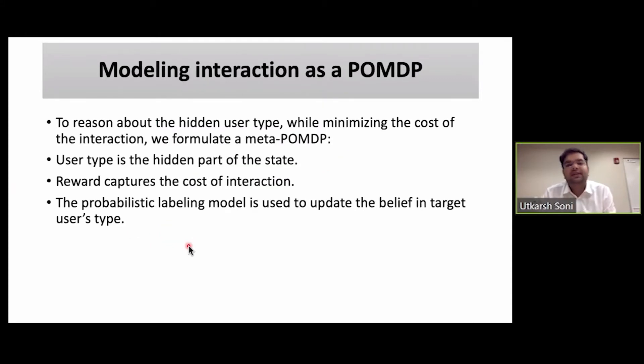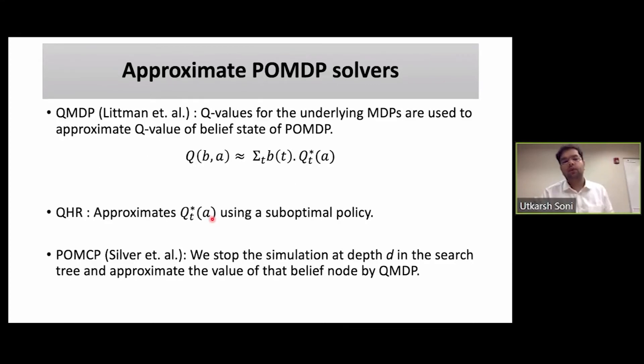Finally, we model this interaction as a POMDP, as a meta-POMDP, where the user's actual type is considered to be the hidden variable of the state. In this case, the POMDP's reward will capture the cost of interaction, and we use the probabilistic learned labeling model to update the belief in the target user's type. As we keep interacting with the user and keep getting labels for the transitions, we can infer what their user type is in the POMDP setup.